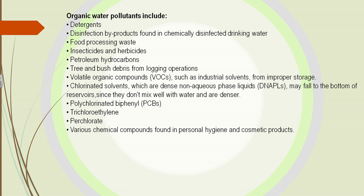Other pollutants include detergents. We have now stopped using certain detergents in our dishwashers because they got into our water system and were not cleaned out — they were gradually moved into the rivers, streams, and back to the oceans. There is also food processing waste, insecticides, herbicides, hydrocarbons, and logging debris. We used to just dump tree and bush debris from logging operations. All these things were dumped into the water. We now have many more laws and regulations to stop this, which we will investigate in another unit.